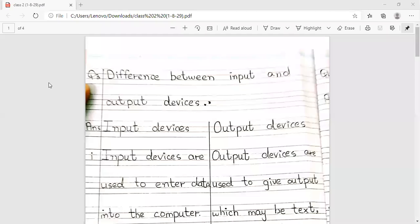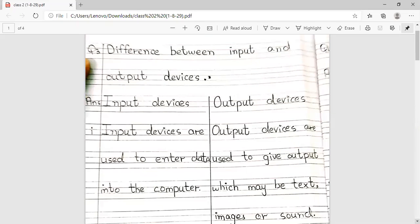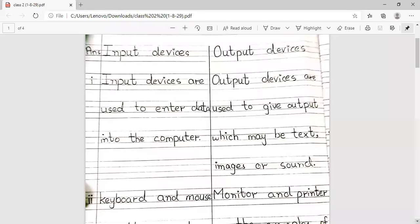Today we will do question number 3: What is the difference between input and output devices? Input devices and output devices, we will also draw the line as I have drawn. Input devices are used to enter data into the computer. Output devices are used to give output which may be text, images, and sound.